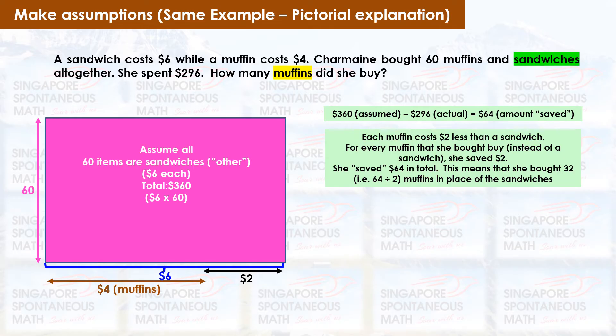However, in reality, she bought some muffins and saved $64. $360 minus $296 equals $64. Each muffin costs $2 less than a sandwich. For every muffin that she bought in place of a sandwich, she saved $2. She saved $64 in total. This means that she bought 32 muffins in place of the sandwiches. $64 divided by $2 equals 32.